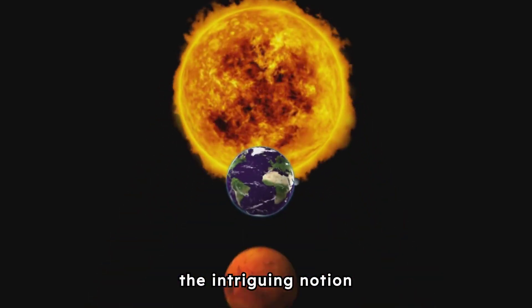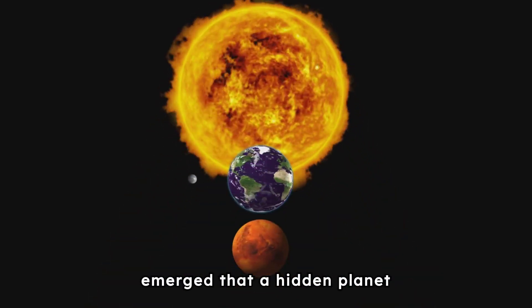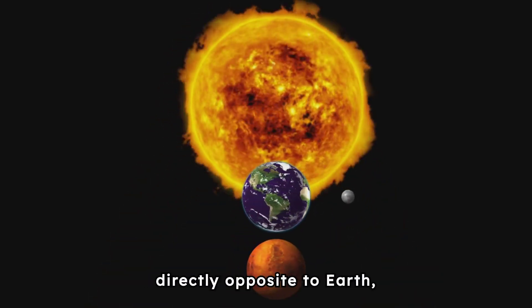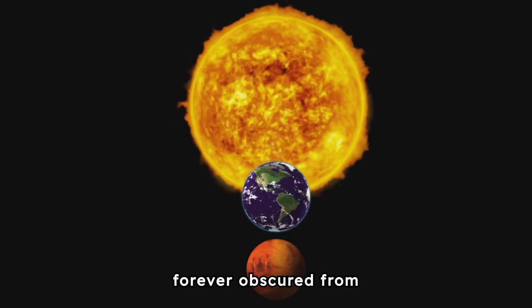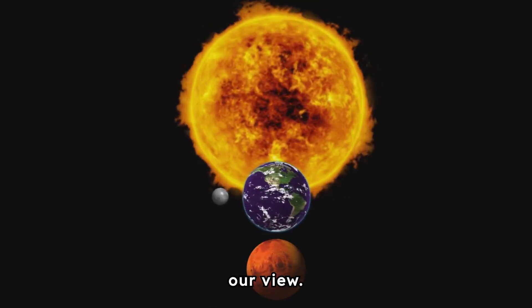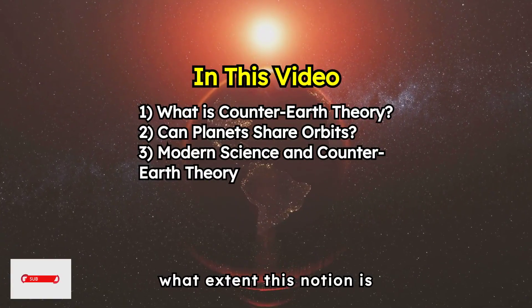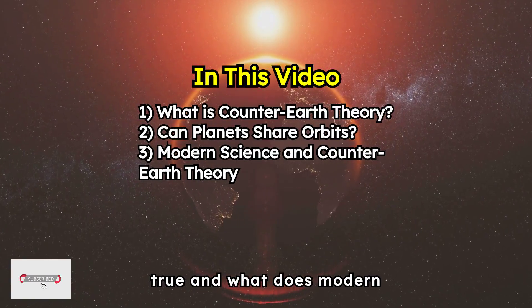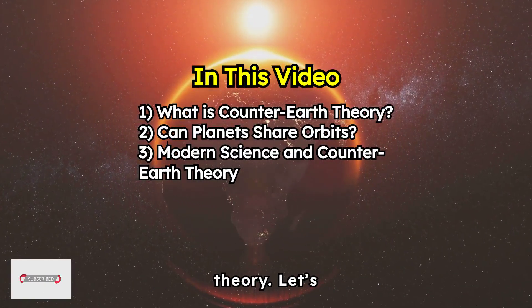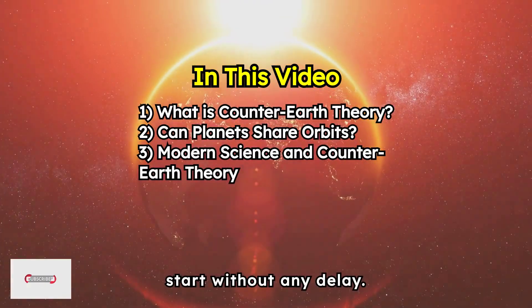Millennia ago, the intriguing notion emerged that a hidden planet could be orbiting the sun directly opposite to Earth, forever obscured from our view. In this video, we'll see to what extent this notion is true, and what modern science has to say on this theory. Let's start without any delay.